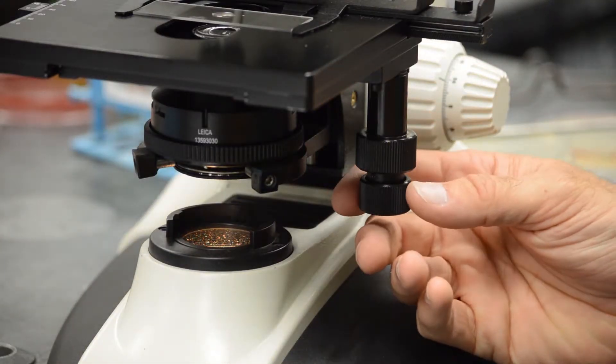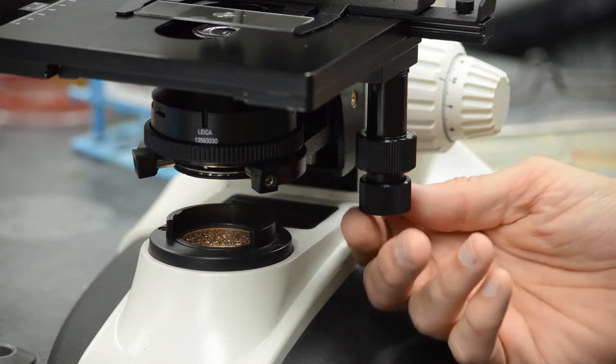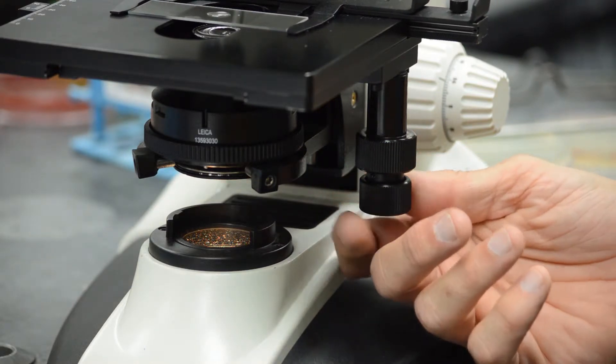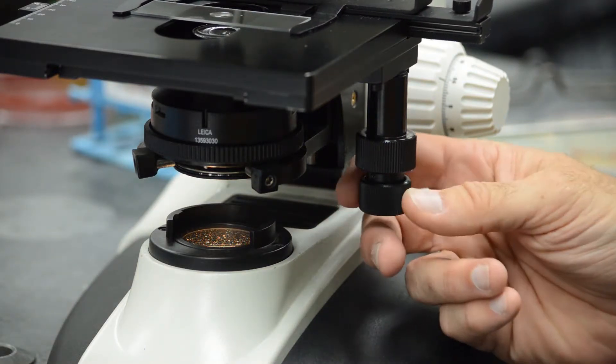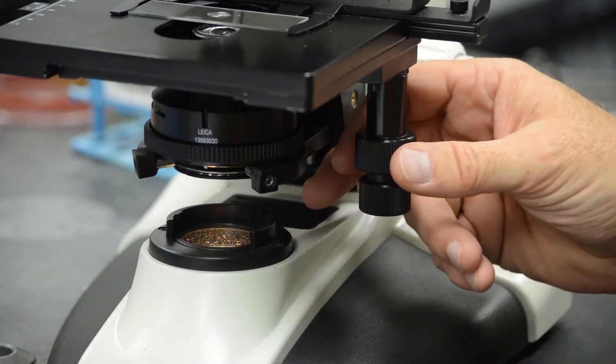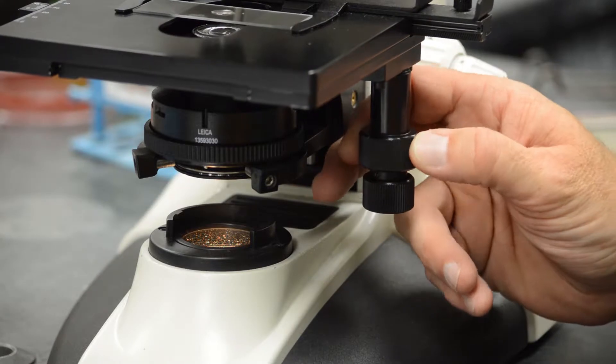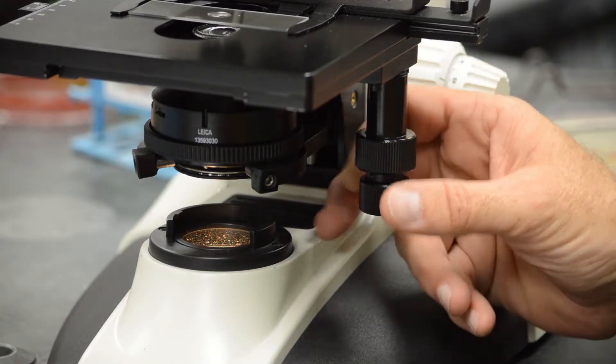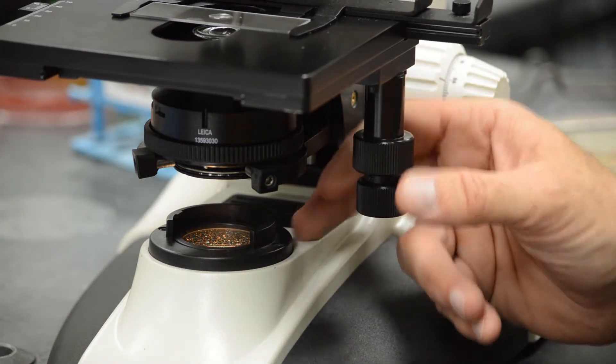In this particular microscope they are oriented up and down. On some microscopes they can be horizontal, and these two knobs control movement of the stage in the right to left and back and forth.